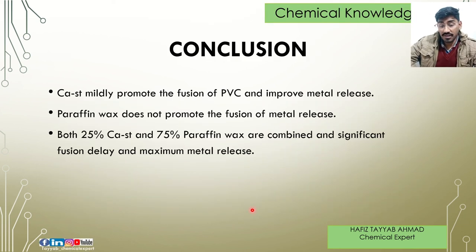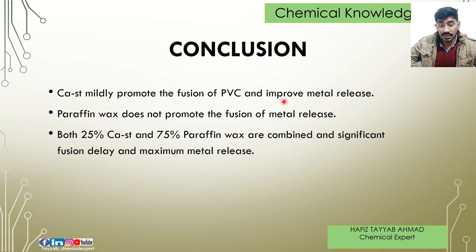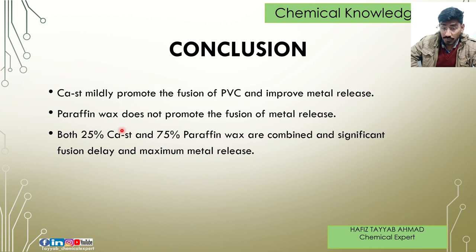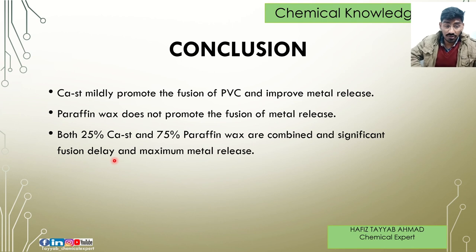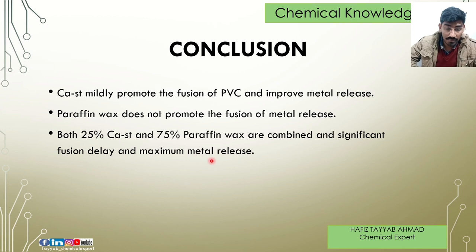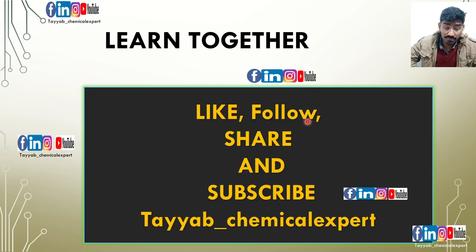In conclusion: calcium stearate mildly promotes the fusion of PVC and improves metal release. Paraffin wax is not helpful for metal release but is effective as an external lubricant. A combination of 25% calcium stearate and 75% paraffin wax together produces a significant fusion delay — meaning it should not reduce processing temperature — and achieves maximum metal release, which is very important.